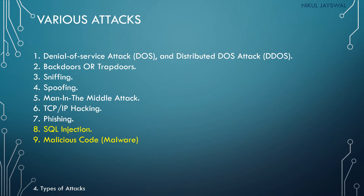In the previous lecture we discussed man in the middle attack, TCP/IP hacking and phishing. In the man in the middle attack, the attacker puts himself in between the communication between two authentic users, and all the communication between the two users will pass through the attacker only. That is the man in the middle attack.